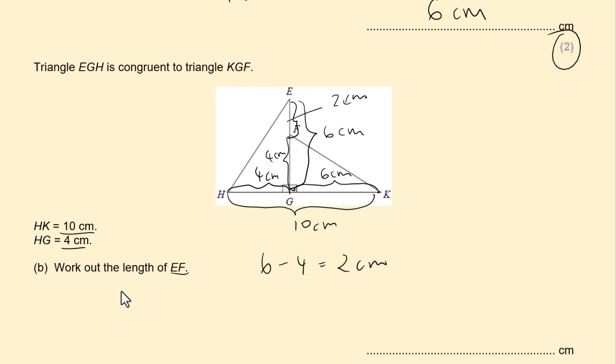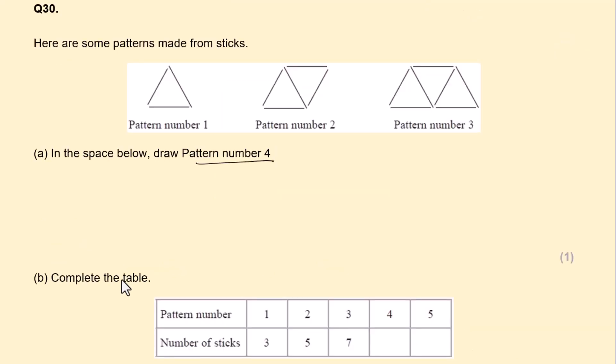In the space below draw pattern number 4. So as we can see they're adding this bit here to the first one and adding this bit here. So pattern number 4. We need to copy down pattern number 3 first. Okay this is worth one mark. Complete the table.